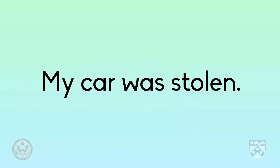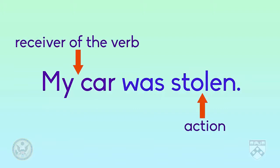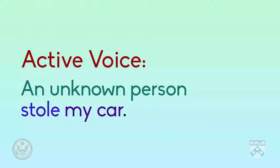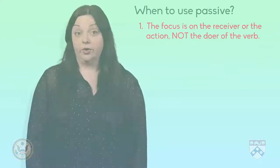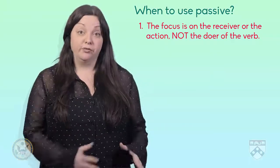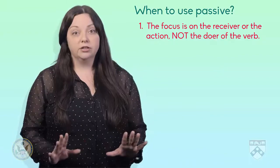Another example is: my car was stolen. Here, I may not know who exactly stole my car. The most important part of this sentence is the receiver of the verb, my car, and the action itself, stolen. In the active voice, this sentence looks like this: an unknown person stole my car. We want the most important information in the front of the sentence, so we use the passive voice here. So the first reason to use passive voice is if the receiver of the verb, or the verb itself, is more important than the doer of the verb.